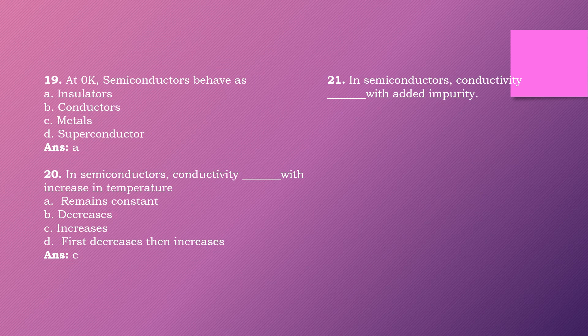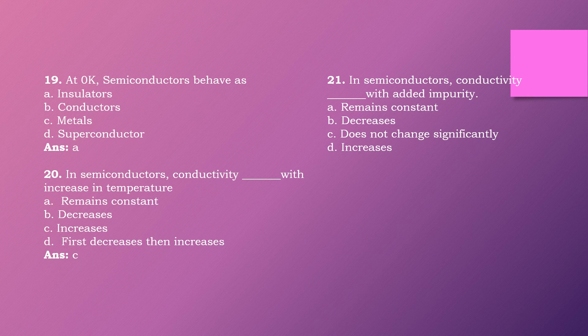Question twenty-one: In a semiconductor, conductivity dash with added impurity. Options are: remains constant, decreases, no change significantly, increases. The right answer is option D: increases. In a semiconductor, conductivity increases with added impurity.